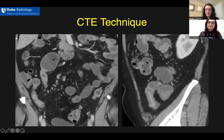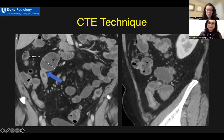These are some example images from our CT enterography technique. On the left, there is a coronal image showing a dilated small bowel segment with fecalization with a downstream area of luminal narrowing, bowel wall thickening, and mucosal hyperemia together demonstrating a stricture. The image on the right is a sagittal reformatted image going straight through the plane of the ileocecal valve demonstrating this long segment of terminal ileal involvement.